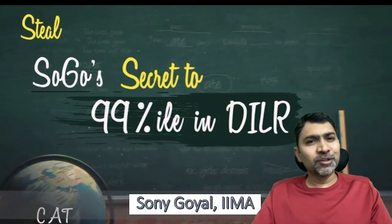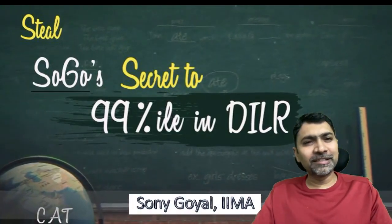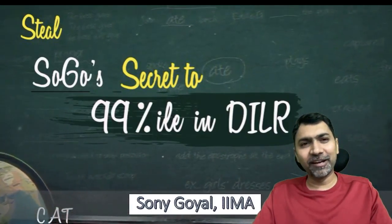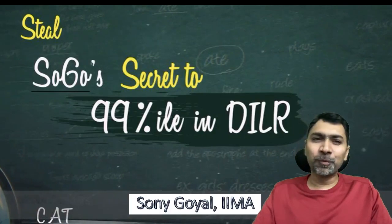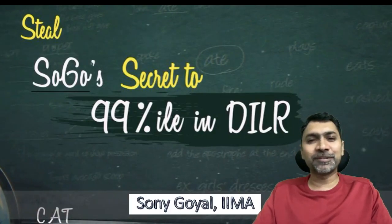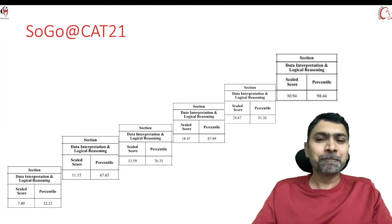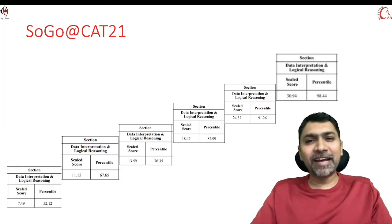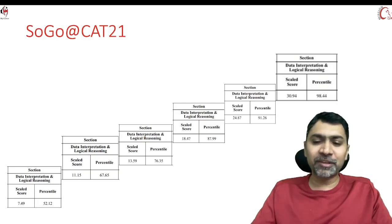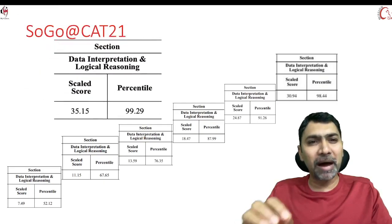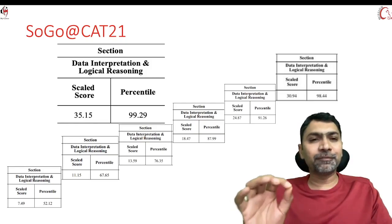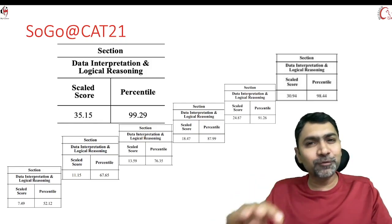One question that students ask me very often is: sir, how do you manage to get 99 percentile every time in DILR? Hello everyone, in this video I shall be talking about the secret to 99 percentile in DILR. Let us look at the score versus percentile breakup of DILR. This is based on CAT 21 score and here is my score which I got—35 score and 99 percentile.